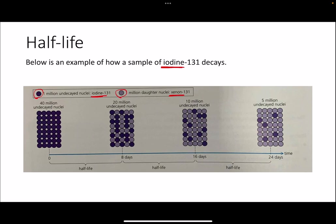To begin with, all 40 million nuclei are iodine — none of them have decayed yet, and there are a total of 40 million nuclei inside the sample. After eight days, half of those nuclei have now decayed, so 20 million iodine nuclei are left undecayed.